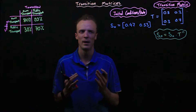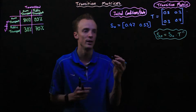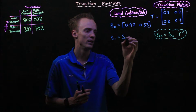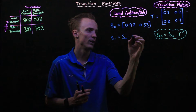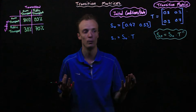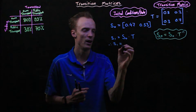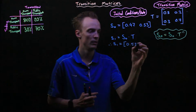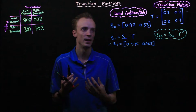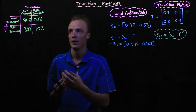For example, to predict how many people bring their own transport versus public transport after one day, we calculate S₁ by multiplying the initial state matrix by T to the power of one — which is just T. After one day, we find approximately 53.5% of people coming via own transport versus 46.5% via public transport.